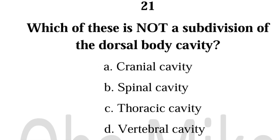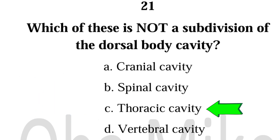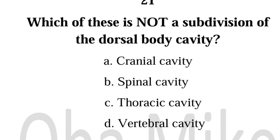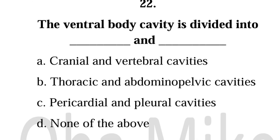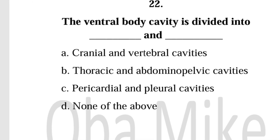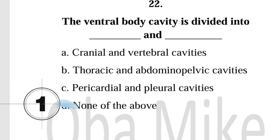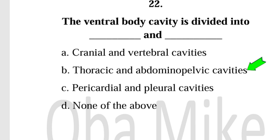Number 21. Which of these is not a subdivision of the dorsal body cavity? Thoracic cavity. Number 22. The ventral body cavity is divided into: Thoracic and abdominal pelvic cavities.